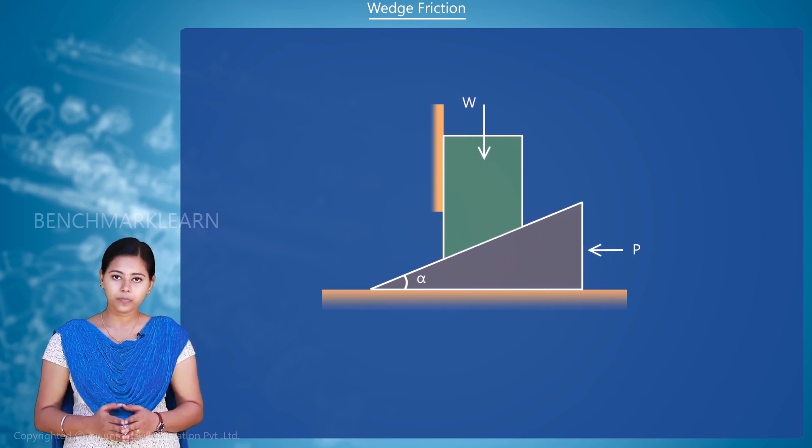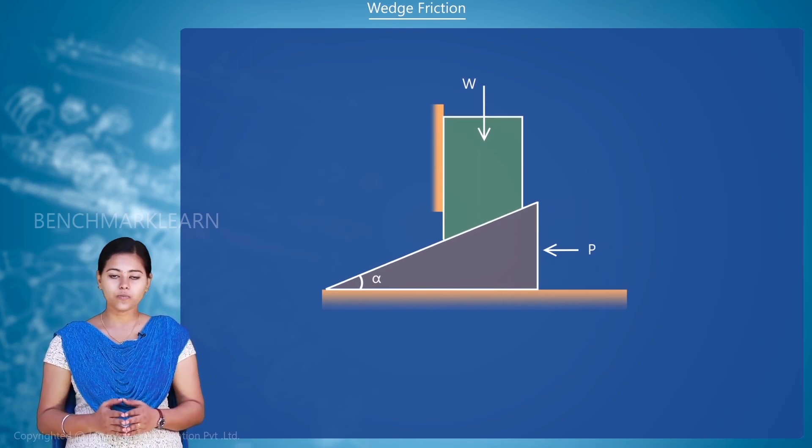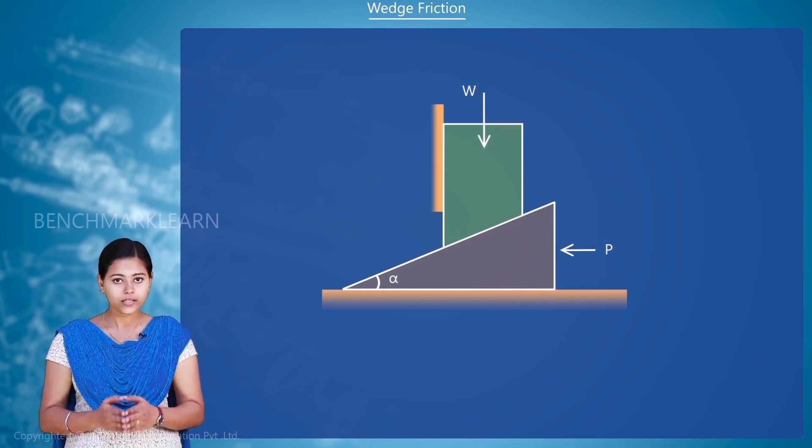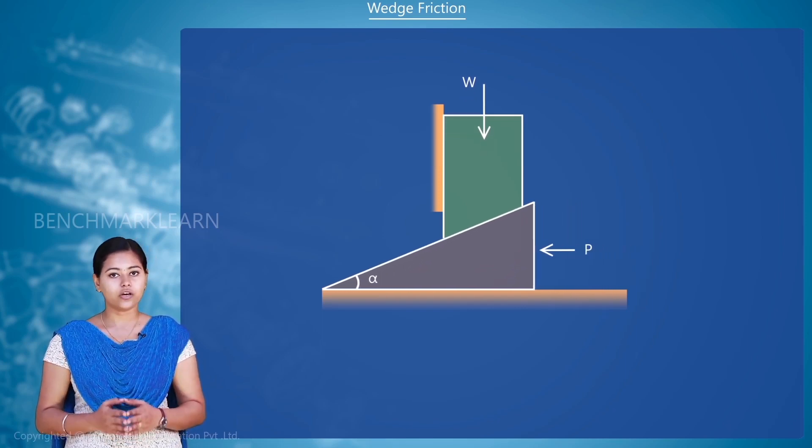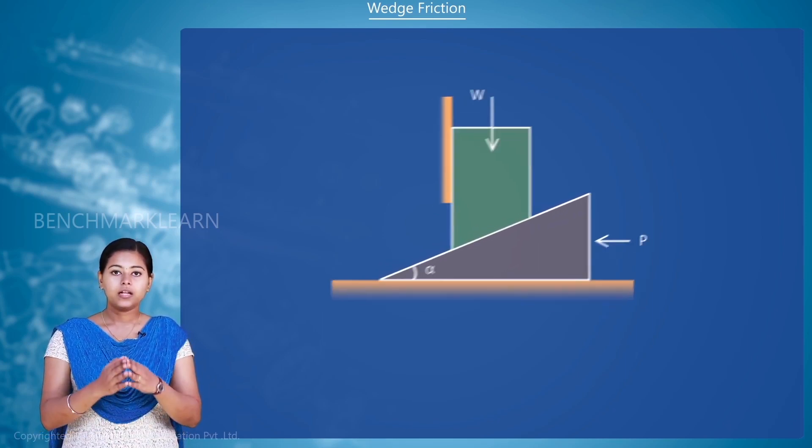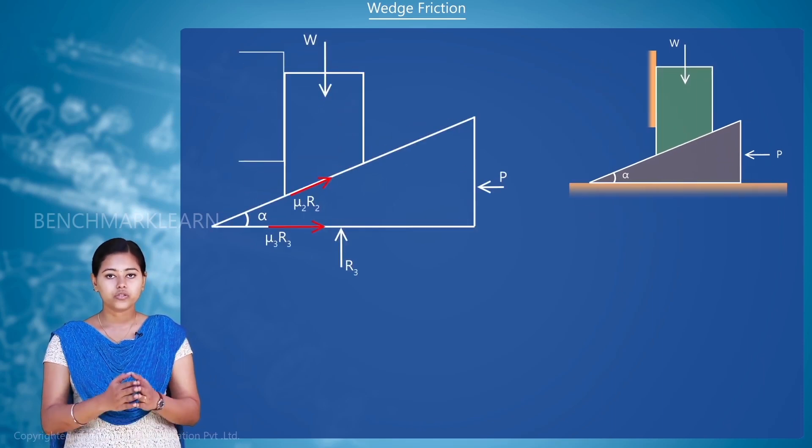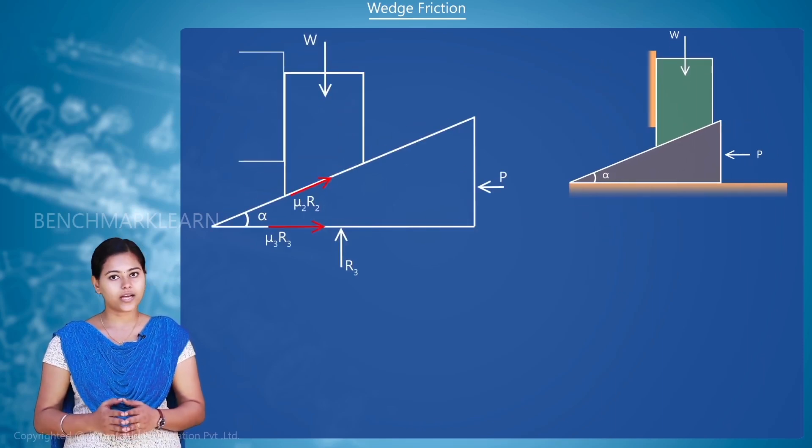They have an inclined plane and are of very small weight compared to the weight which is lifted. Hence, we generally neglect the weight of the wedge. Let us now draw the free body diagram showing all the forces and reactions.